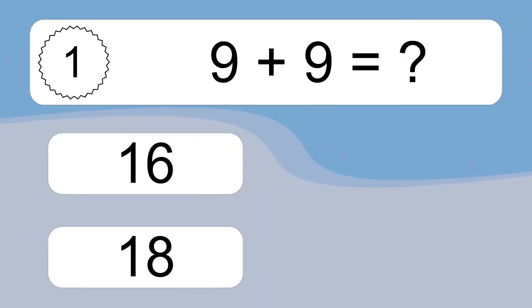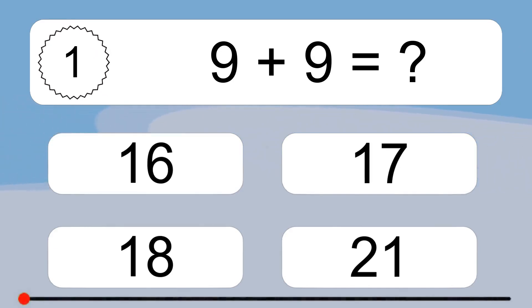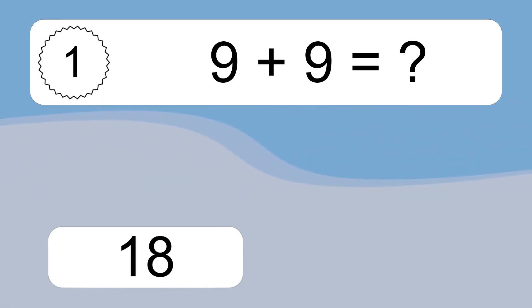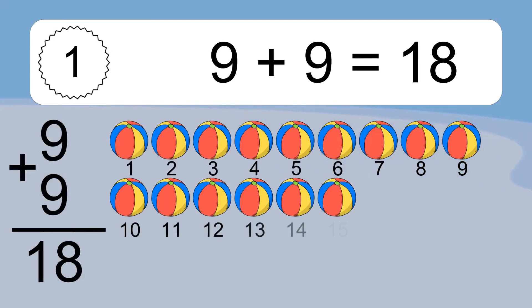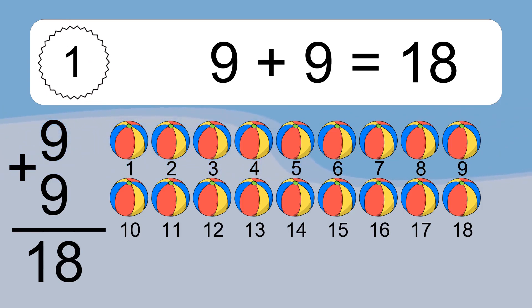9 plus 9 equals what? 9 plus 9 equals 18. Let's count it: 1, 2, 3, 4, 5, 6, 7, 8, 9, 10, 11, 12, 13, 14, 15, 16, 17, 18.